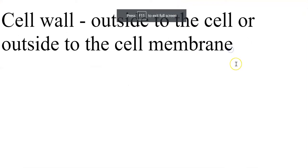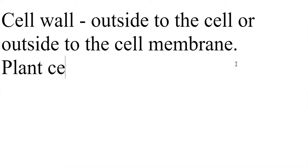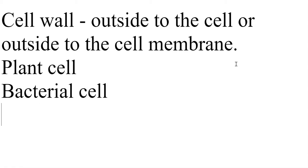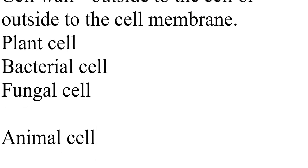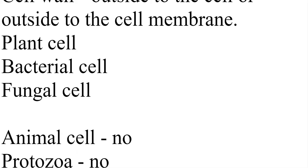Which organisms have a cell wall? Plant cells have a cell wall, bacterial cells have a cell wall, and fungal cells have a cell wall. Animal cells do not have a cell wall, and protozoa, which also comes under the animal kingdom, does not have a cell wall either.